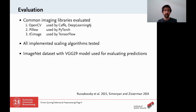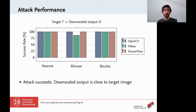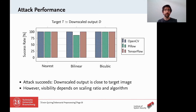For evaluating the attacks and defenses, we consider three common imaging libraries, test all implemented scaling algorithms, and use the ImageNet dataset to have a realistic image setting. First, we check if the downscaled output corresponds to the target image — the attack is usually successful for all algorithms and libraries. However, the second goal — that the modified source image should be similar to its original — shows that success depends on the scaling ratio and the algorithm or library. I refer to the paper for more details.